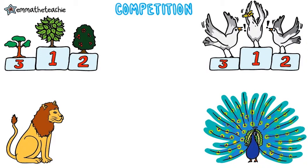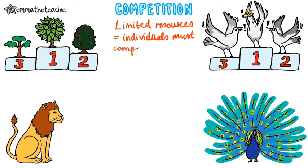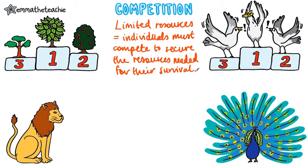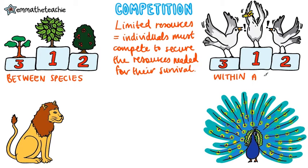There are many organisms in any given community, and they all require resources, for example food or territory. These things are limited, so competition takes place when each individual attempts to secure the resources it needs. Competition can take place between different species, for example different tree species in a forest competing for light. It can also take place within a species, and this is often more intense competition, as the individuals require exactly the same resources.